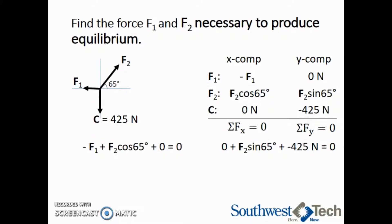Since there is only one unknown in y and 2 in x, we are going to solve for the unknown F2 in the y component. Then we can use that value for F2 in the x component to solve for F1. Using algebra, we see that F2 sine 65 degrees is equal to 425 newtons. Dividing by sine of 65 degrees, we see that F2 is equal to 469 newtons.